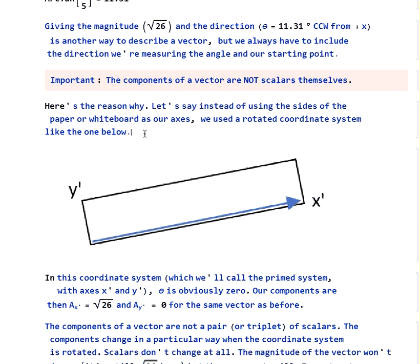We could use a different coordinate system, one that's rotated relative to our first one. We call this one the prime system. We've got x prime and y prime instead of x and y. This same vector that we used before is now entirely in the x prime direction. We have no contribution in the y prime direction.